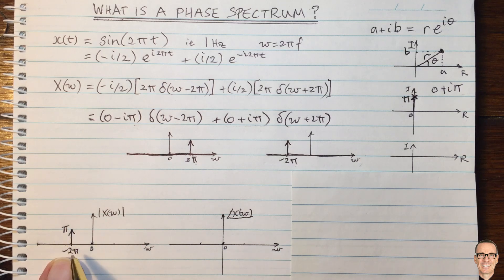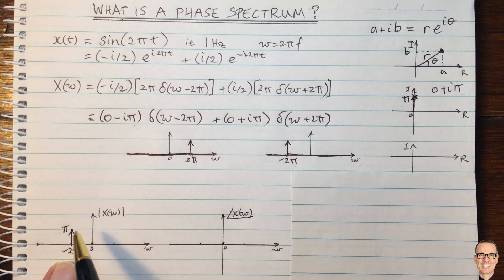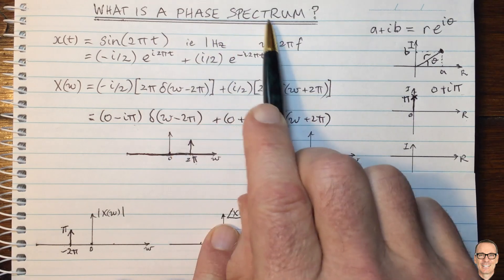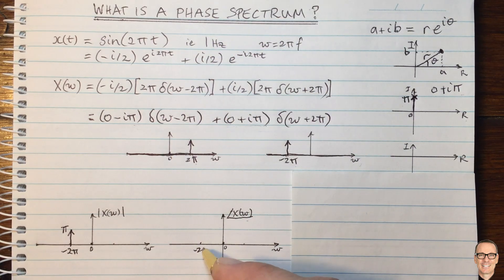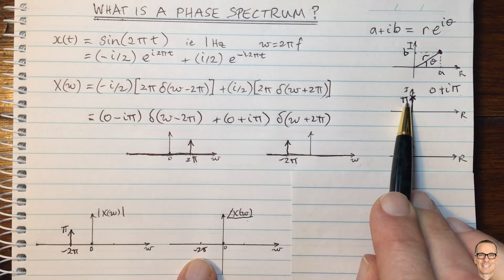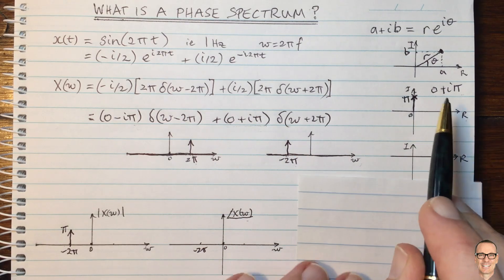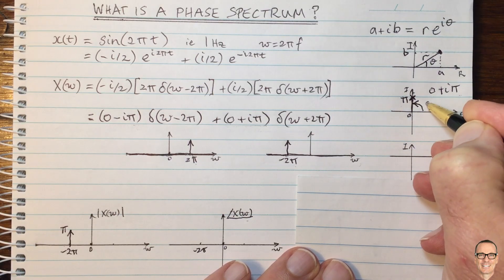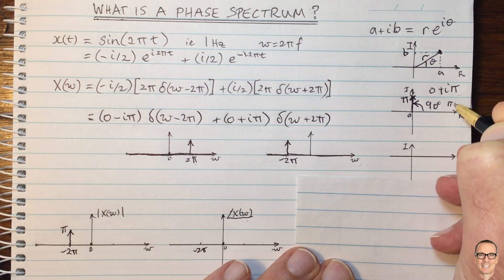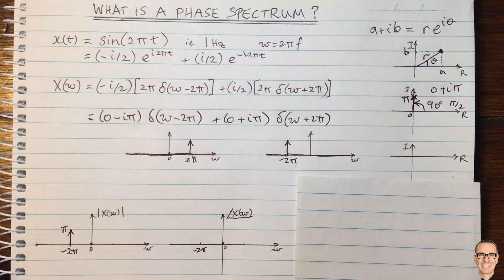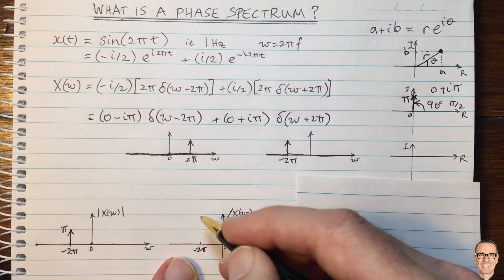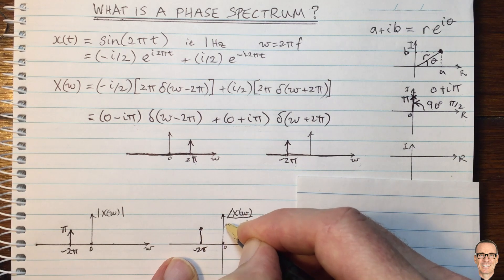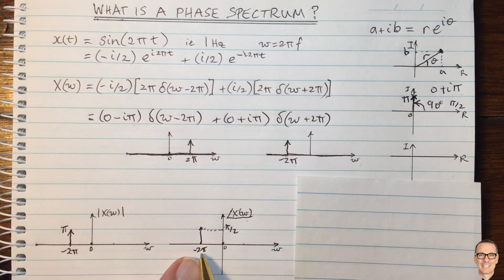It's very important not to get confused by the different pi's: minus 2 pi is a frequency, while this pi is the magnitude of that component. Now in the phase spectrum — at minus 2 pi, which corresponds to the complex number 0 plus i pi — the phase is the angle from the real axis. That angle is 90 degrees, corresponding to a phase in radians of pi over 2. So in our phase spectrum we have positive pi over 2 for the phase at that frequency.